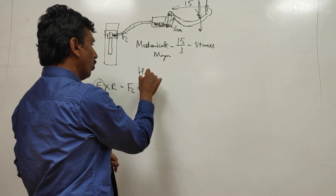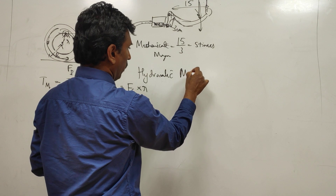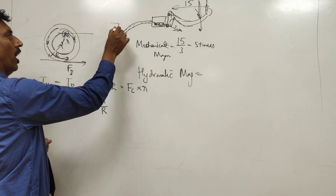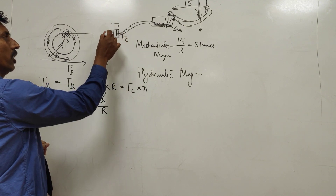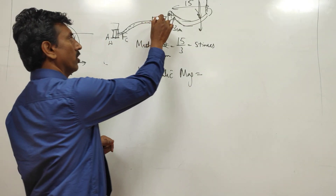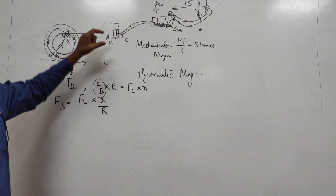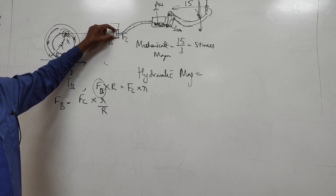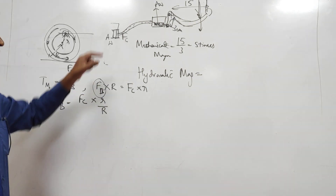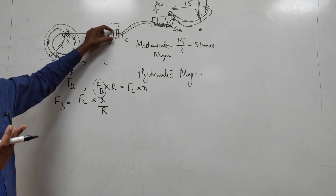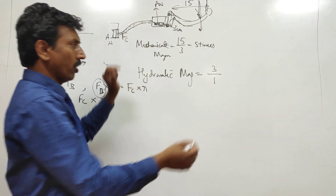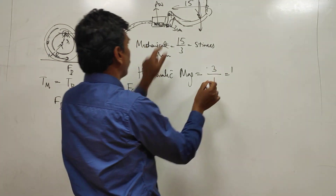The second type is hydraulic magnification. In the caliper you have larger pistons — a larger area — compared to the master cylinder. The wheel cylinder area is larger than the master cylinder area, say by 3 times. Since pressure is the same throughout the hydraulic system, and pressure equals force divided by area, a larger area at the wheel cylinder means a larger force. So FW equals FM multiplied by AW divided by AM, giving hydraulic magnification of about 3 times.